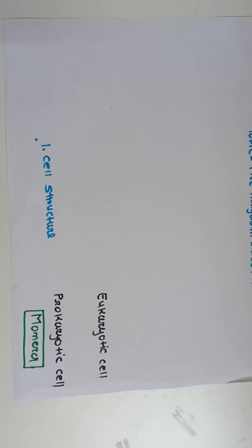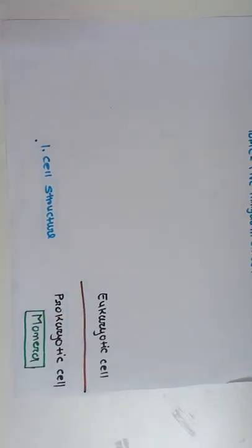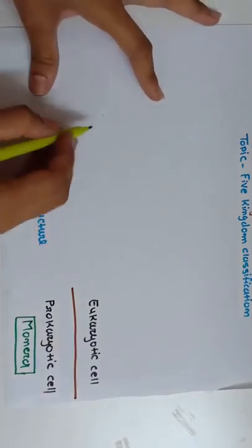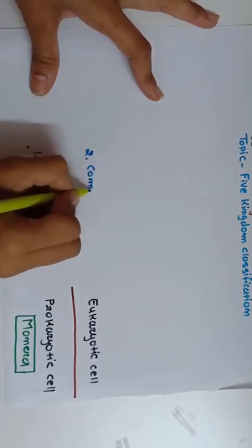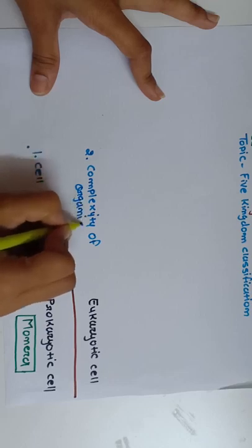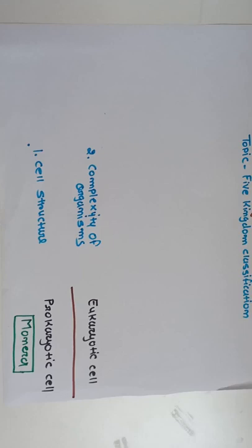The eukaryotic cell is a complex and advanced cell because the nucleus is present, nuclear membrane is present, and membrane-bound organelles are also present. So eukaryotic cell is complex, while prokaryotic cell is very simple — and prokaryotic organisms form the first kingdom, Monera. The second criteria is complexity of organisms. In eukaryotic organisms, two types are present: some organisms have only one cell.